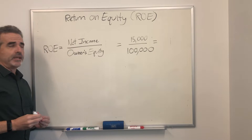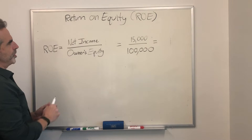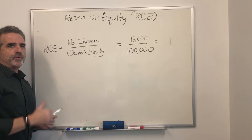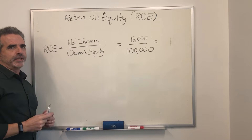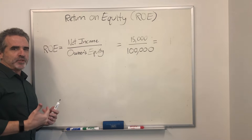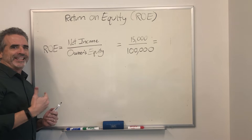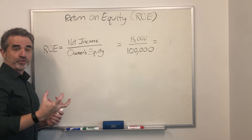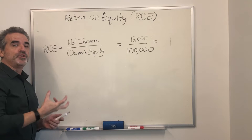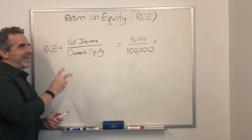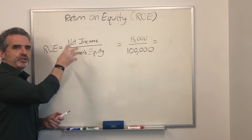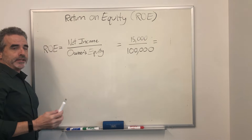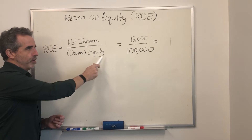Return on Equity comes down to your net income divided by your owner's equity. What this reflects is how efficiently management or ownership is using its operations — specifically, how efficiently you're using your equity, the assets you own in the company, to generate profits. It is net income divided by owner's equity.